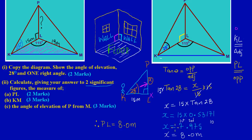Because that's what they asked us to find — PL was the vertical height, so now we know this height to be 8 meters. That's it, thanks for watching. See you in the next video where we will be calculating part B, which is KM, and finding the angle of elevation of P from L. Bye-bye.